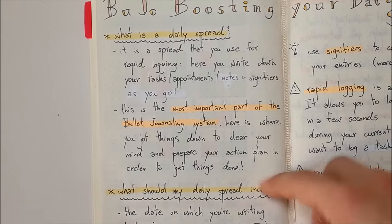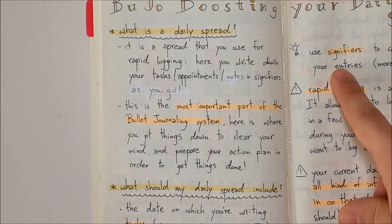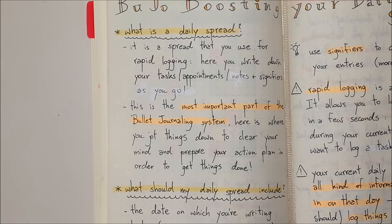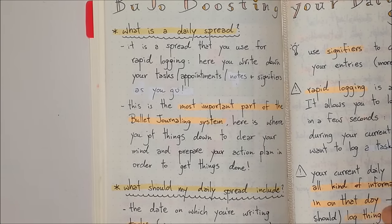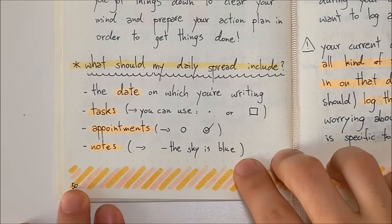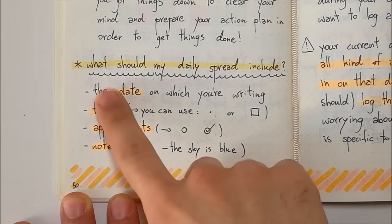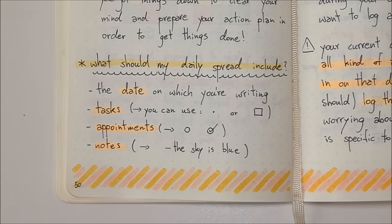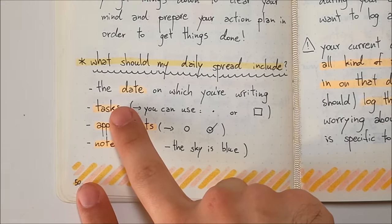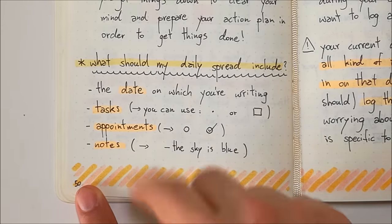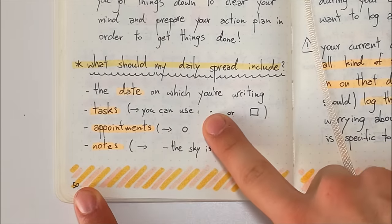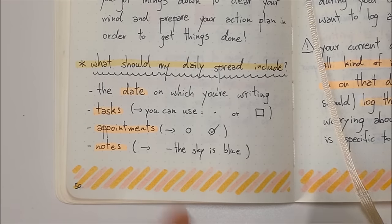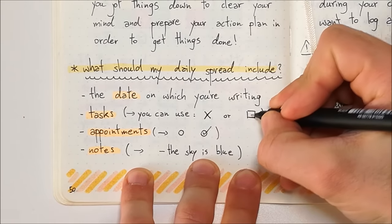Basically, the daily spread is just a blank page where you write in the date and then all of the different entries. Use the bullets and signifiers in order to rapidly log things as you go through your day. The very basic daily spread should include the date and all the different entries or bullets. You have three different types of entries: tasks, appointments, and notes. For tasks, you can either use a dot or a box, and whenever you complete the task, you cross the dot or the box.